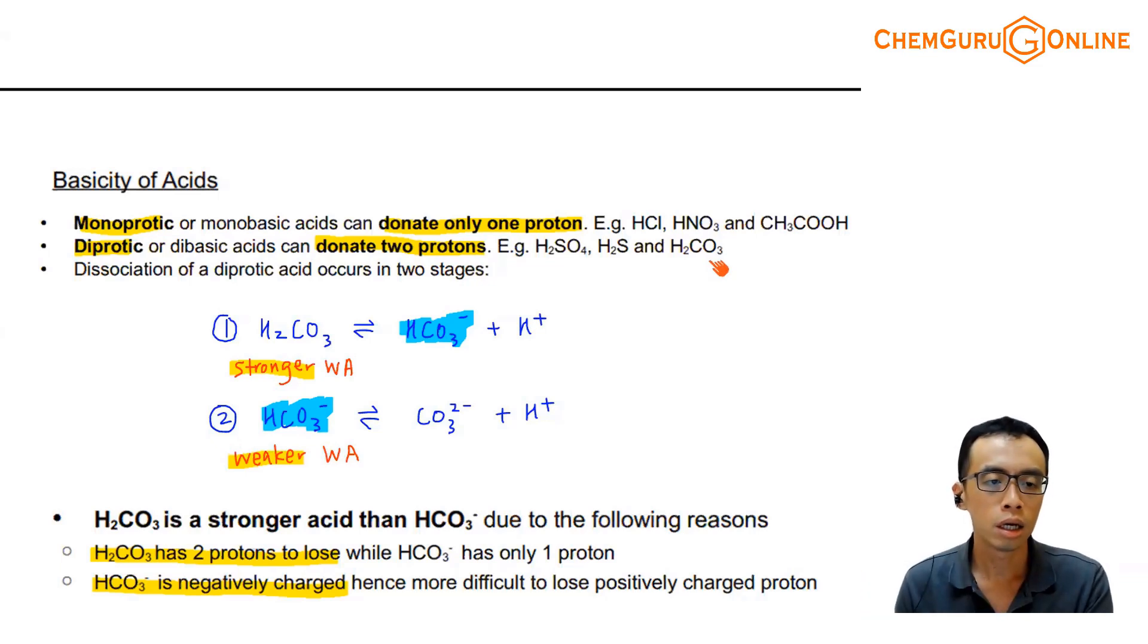So the basicity, how many protons it can donate or accept, and strength, whether it is fully dissociated or partially dissociated, are two different ideas. We don't try to lump them together. You notice previously, when we consider the dissociation of strong acid, weak acid, strong base, weak base, we all use monoprotec acid-base dissociation. We don't do diprotec species. We have to be very familiar with monoprotec acid-base dissociation.